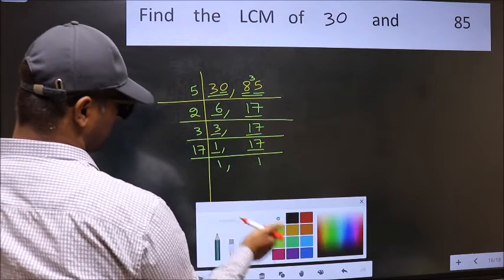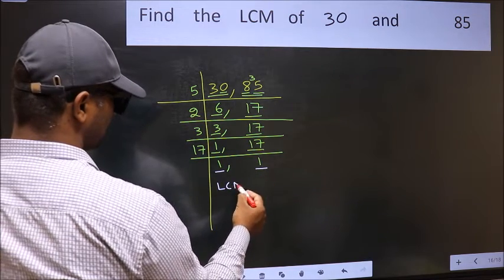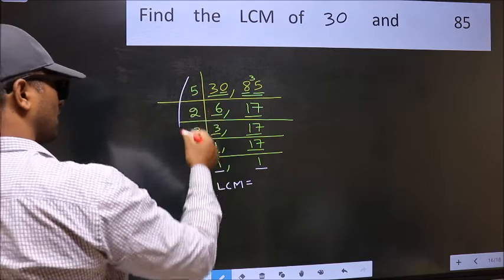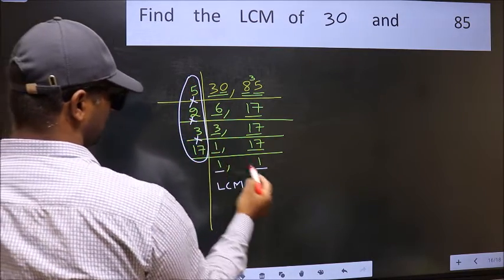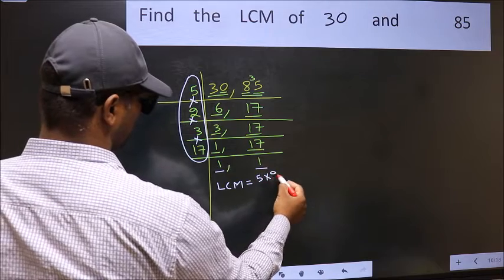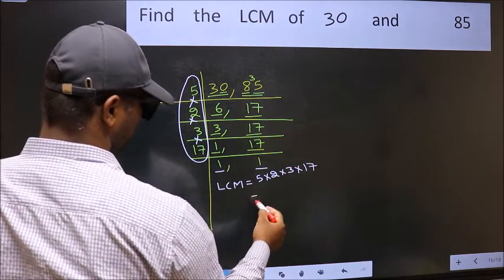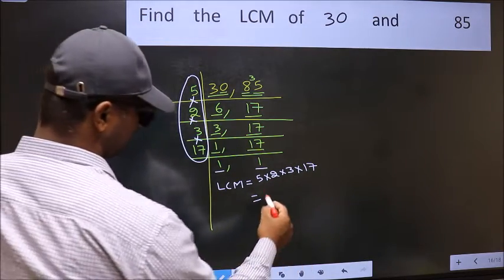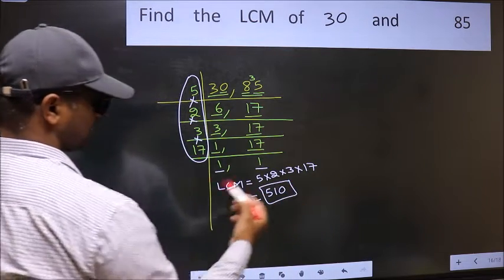So we got 1 in both the places. So our LCM is the product of these numbers. That is 5 into 2, into 3, into 17. When we multiply these numbers, we get 510 as our LCM.